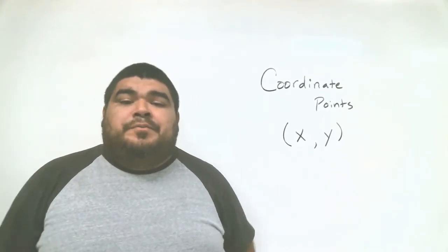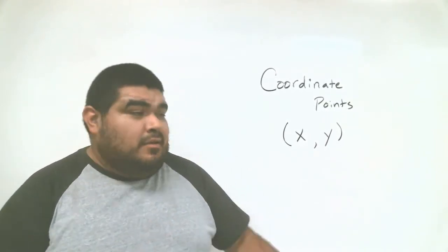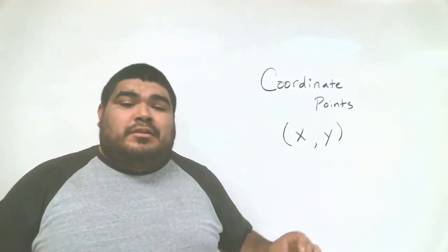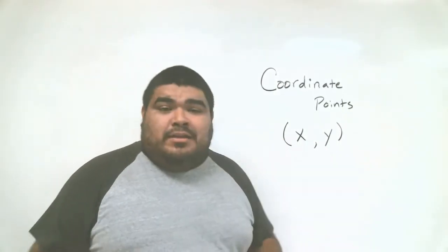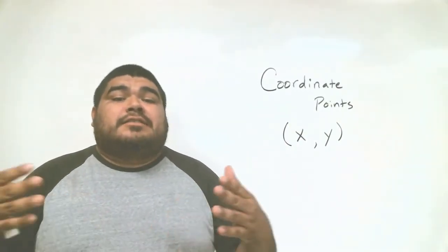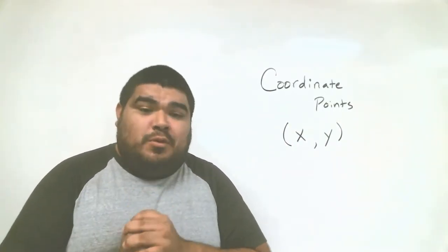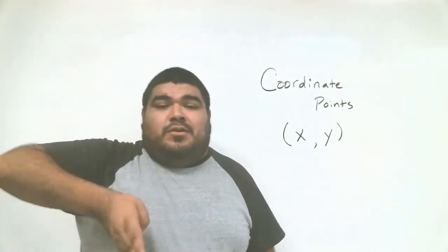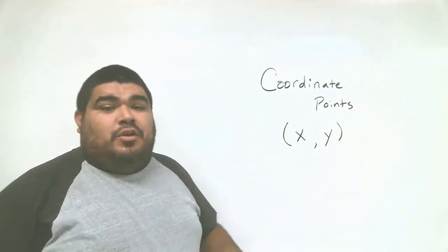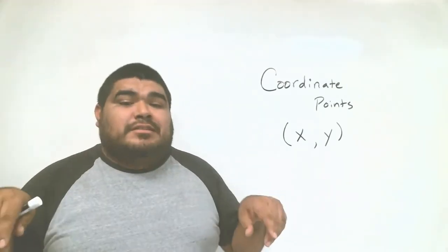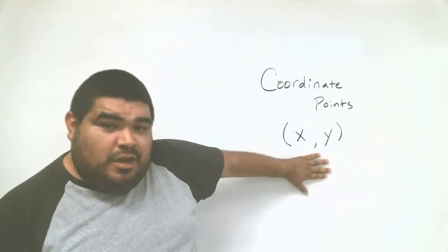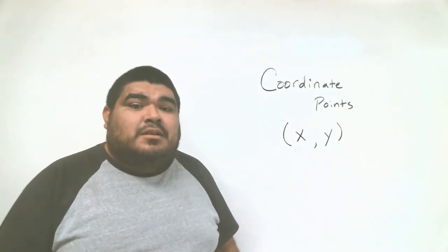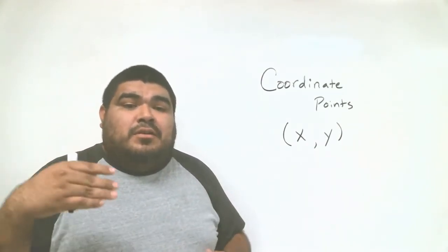Alright guys, so coordinate points — up here on the board. A coordinate point is usually an x and a y, a set of points that tells you where a point on the graph is located. Remember, your horizontal line is your x and your vertical one is your y. A coordinate point tells you where the location or point is located. Now that we know the basics, we can start graphing our first example.